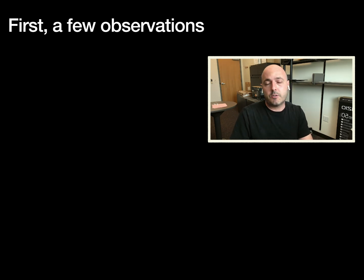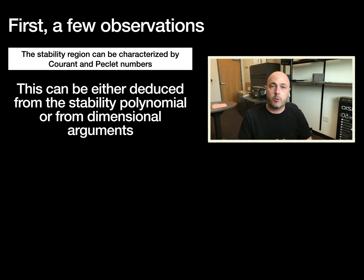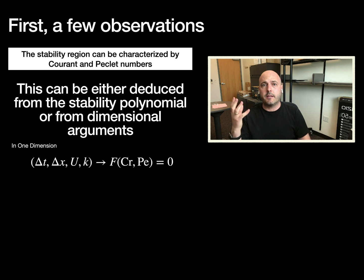First, a few observations. The stability region can be entirely characterized by Courant and Peclet numbers. This is critical because it will reduce our space when we interpret these stability conditions. This can be deduced either from dimensional arguments or from the stability polynomial itself. In one dimension, we're looking at a stable timestep delta T as a function of grid resolution delta X, advective velocity U, and diffusion coefficient K. If you apply the Buckingham-Pi theorem to these parameters, one ends up with two dimensionless numbers. We choose the Courant number and the Peclet number to be the most convenient because the Peclet number can be related to the cell-Reynolds number.